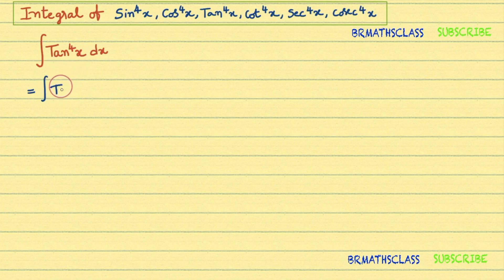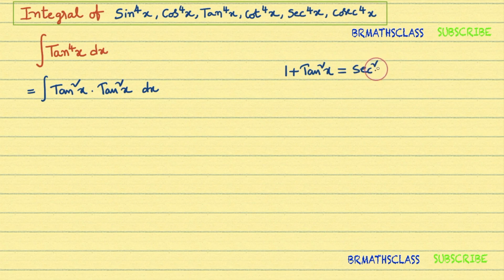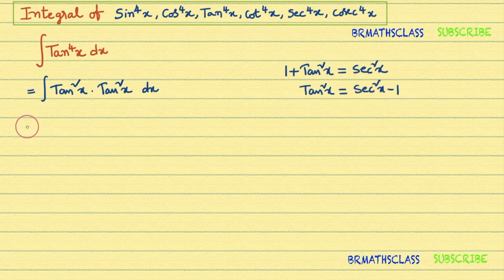tan⁴x can be written as tan²x into tan²x, so we write the integral of tan⁴x dx as integral of tan²x into tan²x dx. In trigonometry we know the formula 1 + tan²x = sec²x, from which we can write tan²x = sec²x − 1.